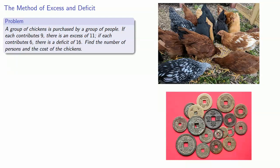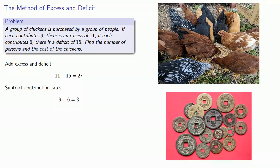Leroy actually gives two different ways of solving this type of problem. We'll look at the second one, as it makes a little more sense initially. We'll add the excess and deficit — eleven plus sixteen — that makes twenty-seven. Then we find the difference of the contribution rates: nine minus six equals three. Now we divide twenty-seven by three, and this result, nine, is the number of persons.